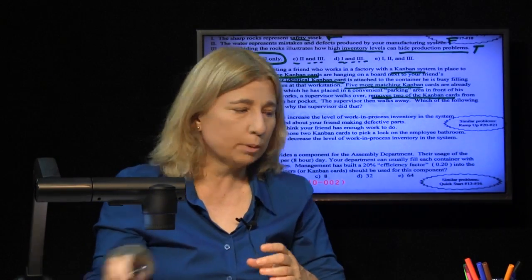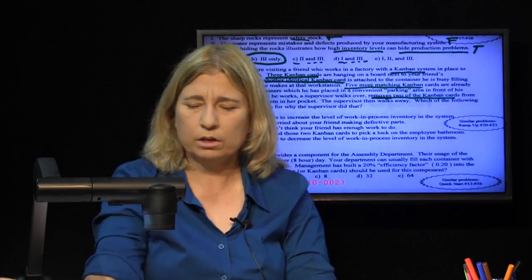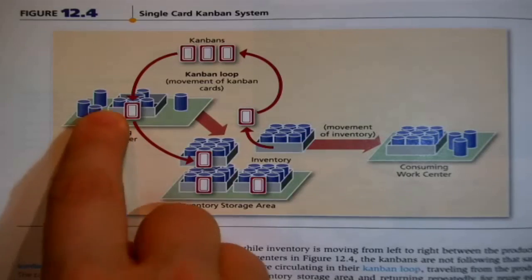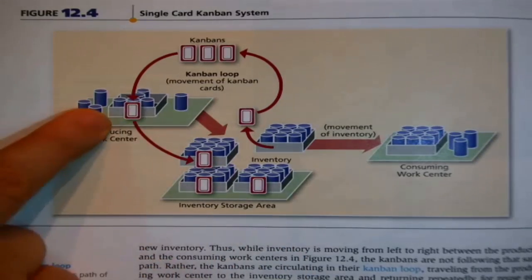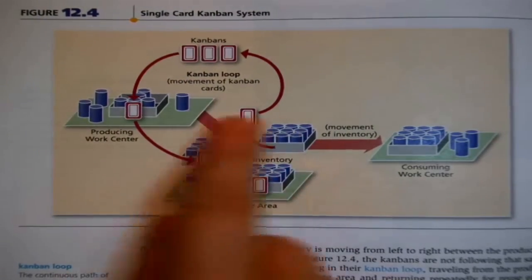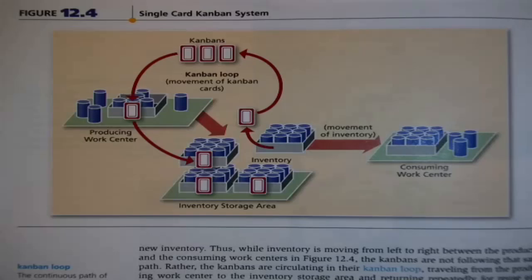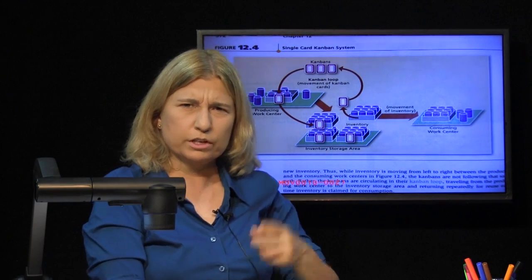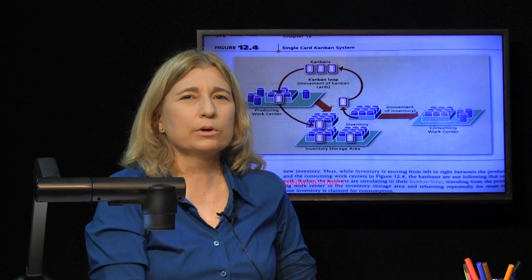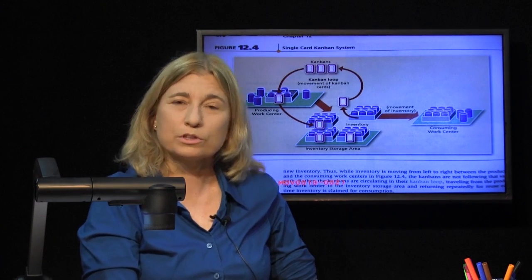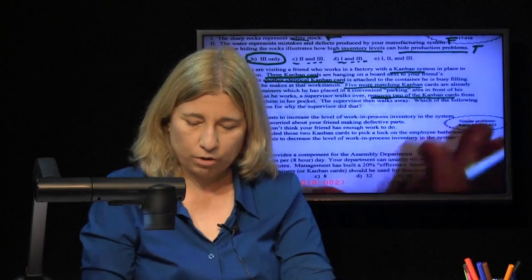That was a verbal description of a single-card Kanban system — we had an image for that in the book. Your friend is over here working. There were three cards hanging on the board, one card attached to the box he was filling, and a bunch of others in the parking area where all the full boxes are stored. The key to answering this question is remembering the whole point of a Kanban card system: a Kanban loop controls inventory levels.